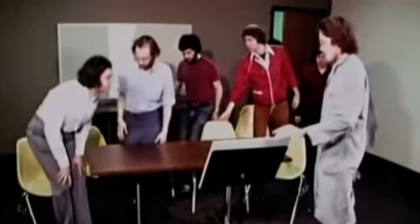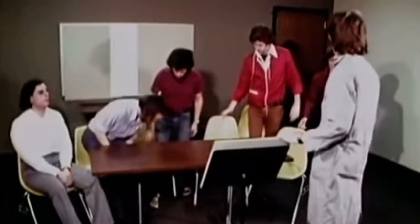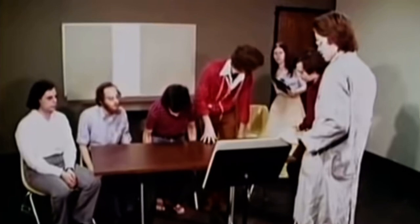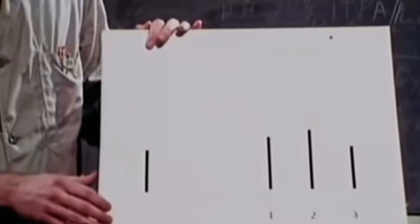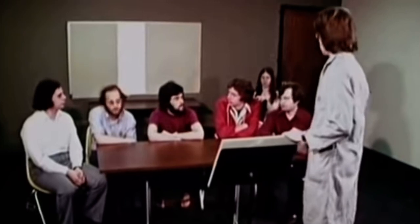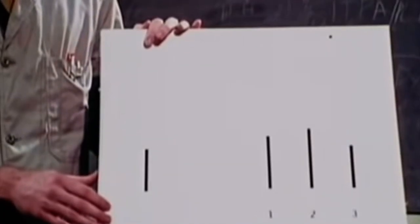The Asch experiment is one of psychology's oldest and most popular pieces of research. A volunteer is told that he's taking part in a visual perception test. What he doesn't know is that the other participants are actors and he's the only person taking part in the real test, which is actually about group conformity.